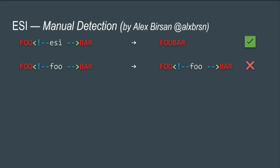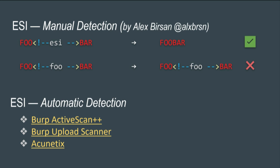To identify if you're dealing with an ESI-enabled caching server, Alex Bursant on Twitter suggested leveraging ESI comments — tags that get stripped by the ESI server. If an HTML-comment-style ESI tag is removed from the response but a non-ESI tag like 'foo' comes back, you're probably dealing with an ESI engine. For automatic detection, Burp Active Scan++, Burp Upload Scanner, and Integriti can all detect ESI injections using this heuristic.